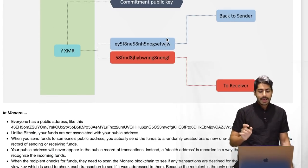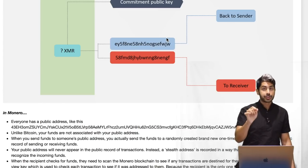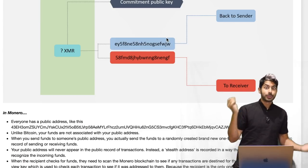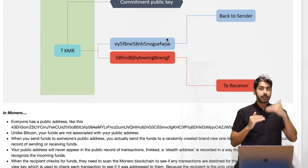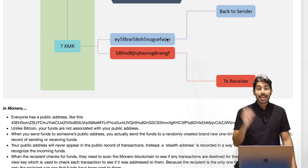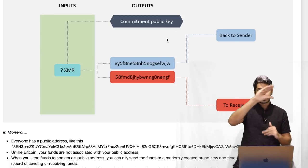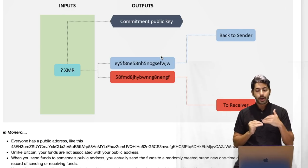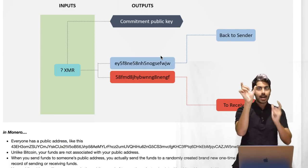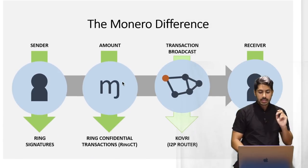When the recipient checks for funds, they scan the blockchain to see if any transactions are destined for them. The recipient has a secret view key used to check each transaction when scanning the blockchain. Because the recipient is the only one who knows the secret view key, only they can see funds sent to them. That's why when you launch the Monero Wallet, it scans the blockchain for transactions addressed to you. Anyone who has your secret view key can also see what funds you've received. The output is the commitment public key — public — plus two secret view keys: one for the sender and one for the receiver. Publicly, there's just this one-time address not linked to either party — that's the idea of stealth addresses, which hides the receiver.